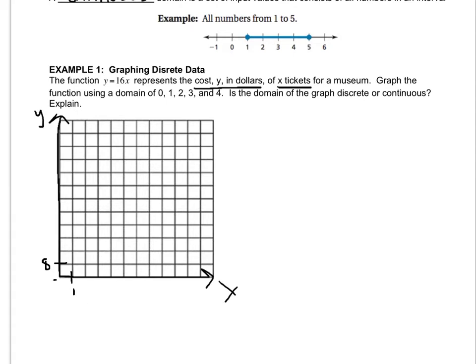When I plug in 0, I get 0. 1 gives me 16, 2 gives me 32, 3 gives me 48, and 4 gives me 64.